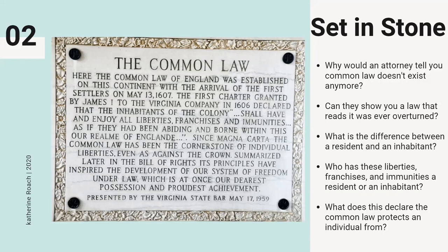What is the difference between a resident and an inhabitant? Right here, the text says 'the inhabitants of the colony' have all these liberties, franchises, and immunities. The word 'inhabitant' is really, really key — it does not say 'resident.' That's really important. And since Magna Carta, the common law has been the cornerstone of individual liberties even as against the crown, so this is protecting you from the crown.